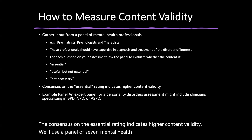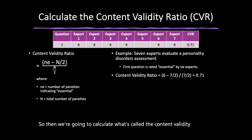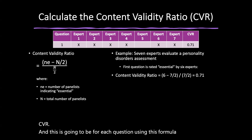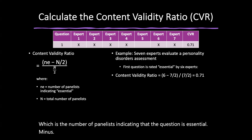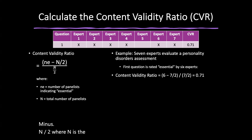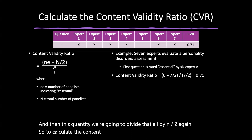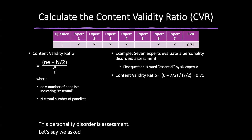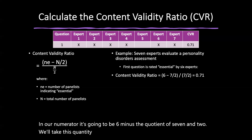We'll use a panel of seven mental health experts. We calculate the content validity ratio (CVR) for each question using the formula: CVR = (NE − N/2) / (N/2), where NE is the number of panelists indicating a question is essential and N is the total number of panelists. For example, if the first question is rated essential by six of seven experts, the CVR equals (6 − 3.5) / 3.5, which equals 0.71. After repeating this process for additional questions, suppose the CVRs for questions two through six are 0.45, 0.25, 0.55, 0.65, and 0.75 respectively.